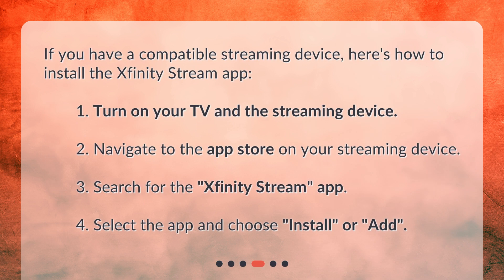If you have a compatible streaming device, here's how to install the Xfinity Stream app: 1. Turn on your TV and the streaming device. 2. Navigate to the App Store on your streaming device. 3. Search for the Xfinity Stream app. 4. Select the app and choose Install or Add.